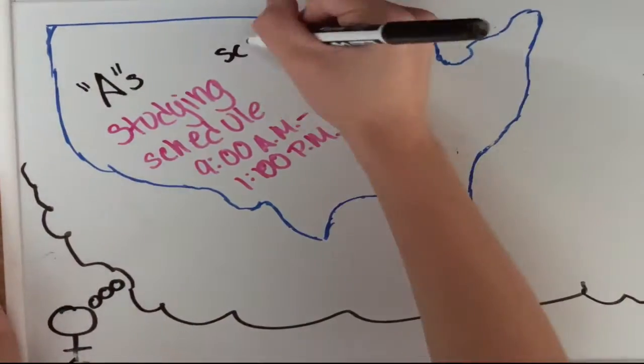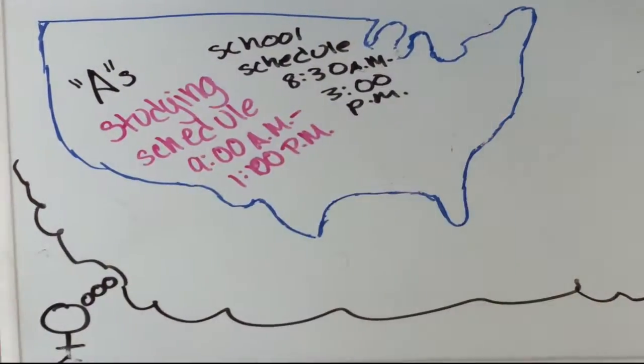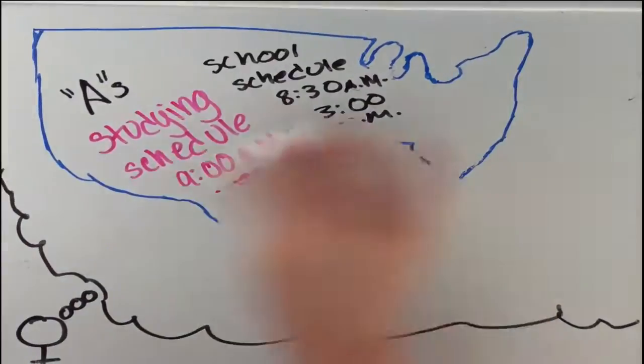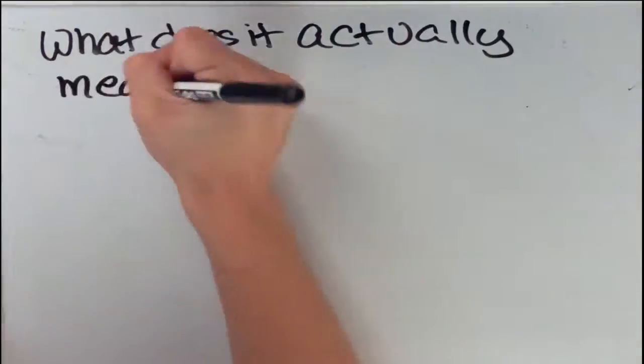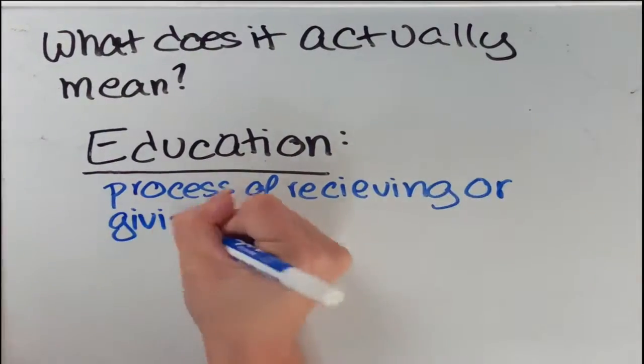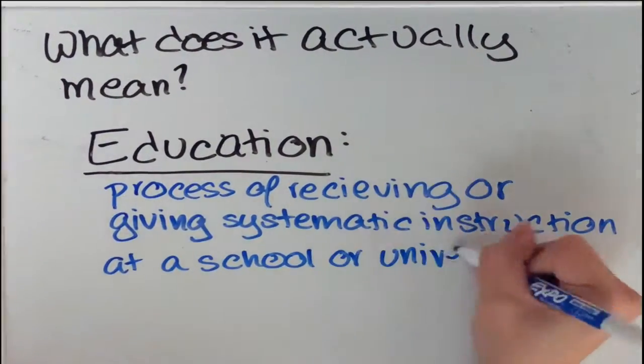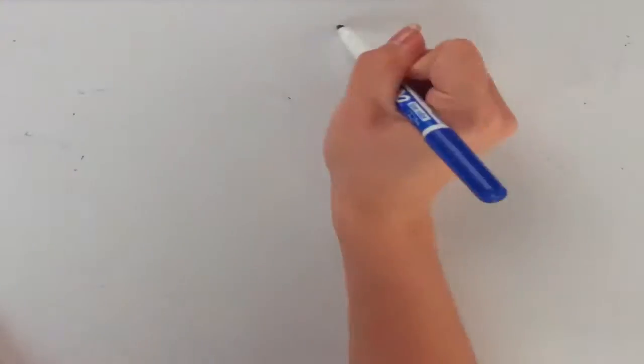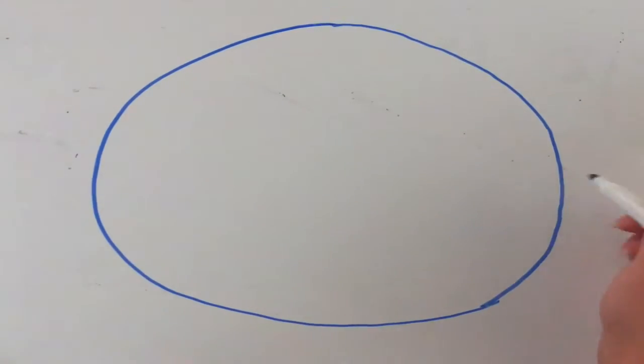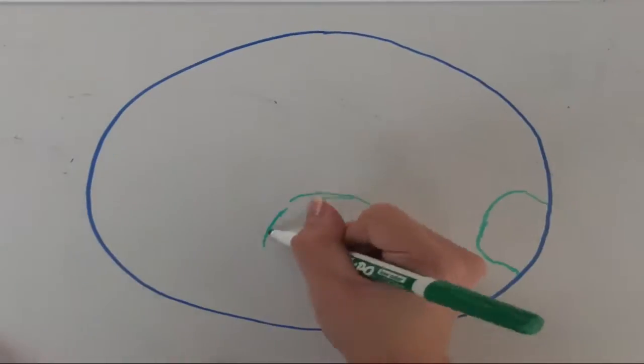But what exactly is education? Well, if you look in the dictionary, education is defined as the process of receiving or giving systematic instruction, especially at a school or university. So most Americans have a pretty similar view to the definition, but that's not entirely accurate.